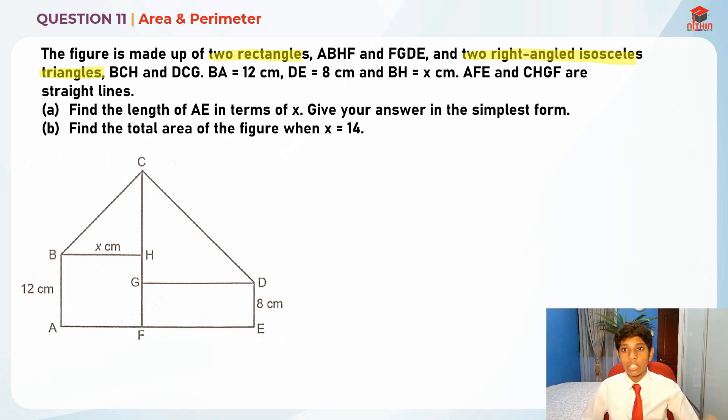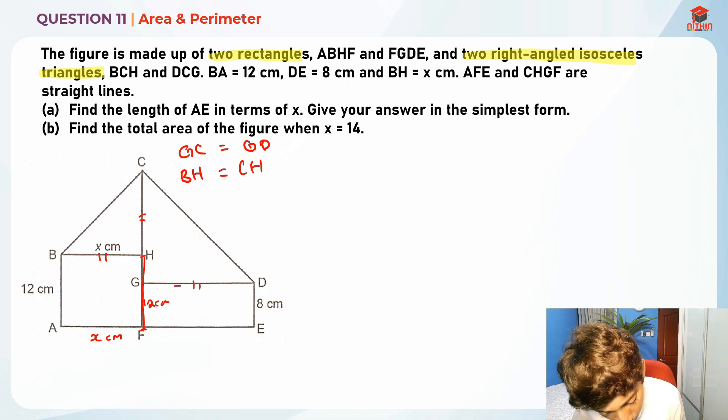These are the two right-angled isosceles triangles, meaning that the sides are actually the same. So GC is equal to GD, and BH is equal to CH. We have two rectangles, so basically we know that AF is x cm as well, and HF is 12 cm.